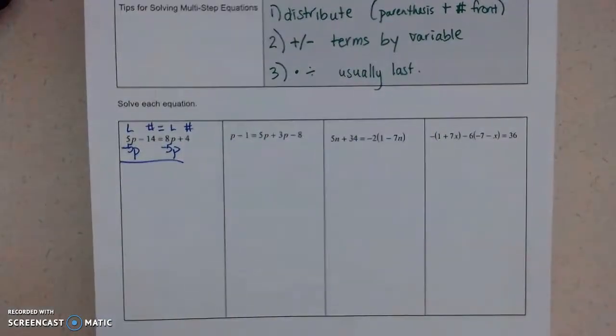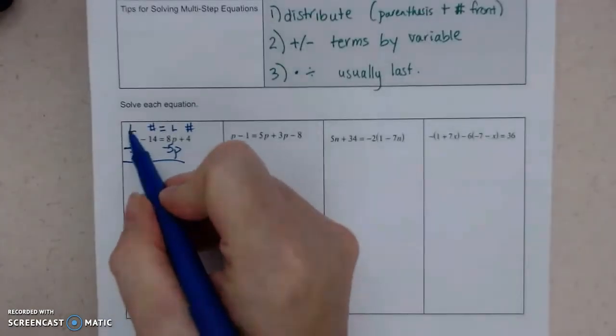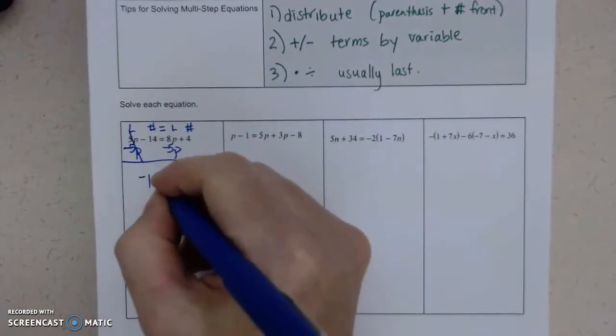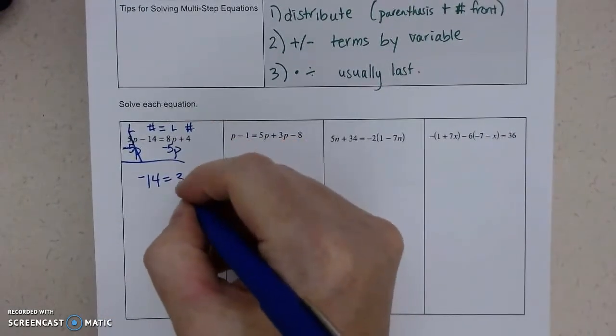So you're going to line up your letters. And check, 5 minus 5 does cancel. Now be careful, when you bring this down, it's a negative 14. Don't forget your sign. 8P minus 5P is 3P.